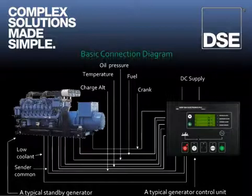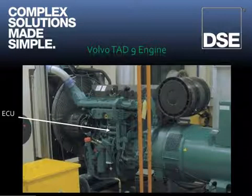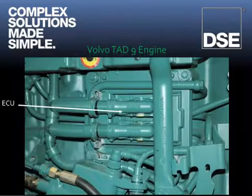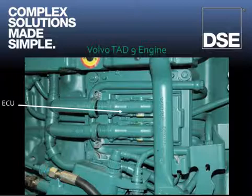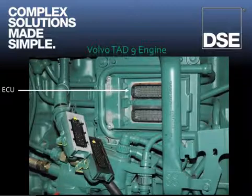This wiring, and much more, must be made by the generator assembler or panel builder. An electronic engine is fitted with a large computer called an ECU, that is connected to many sensors on the engine. These connections and sensors are fitted by the engine manufacturer. The engine ECU therefore measures parameters from many sensors to enable the ECU to finally control the operation of the engine and fuel injection.